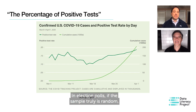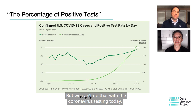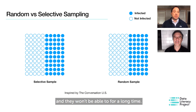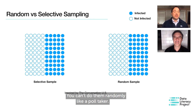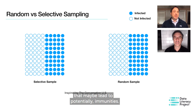This isn't like an election poll where we can take a random sample of, say, 5,000 people and have a very good idea about how an entire country will vote. In election polls, if the sample truly is random — meaning if it hasn't under- or over-represented any demographic or group — then we can be very confident with the various projections. But we can't do that with coronavirus testing today. Different countries can't just test everyone every day, and they won't be able to for a long time. You can't do them randomly like a poll taker, and that makes it hard to detect widespread patterns — data points that start to become related and maybe tell a story about hotspots and potentially immunities.